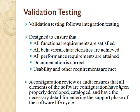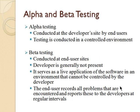A configuration review, or auditing, will be conducted to ensure all elements of software have been properly developed. Alpha and beta testing are conducted. Acceptance testing is conducted by end-users, not software engineers, over a period of weeks or months. Alpha testing is conducted at a developer site by a customer. Beta testing is conducted at one or more customer sites by end-users, who record all problems encountered and report these to the developers at regular intervals.